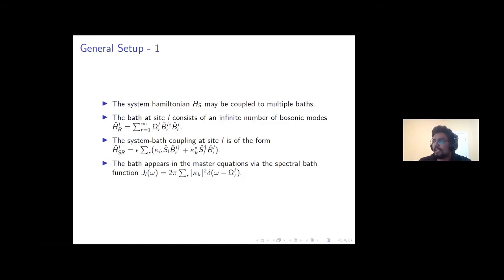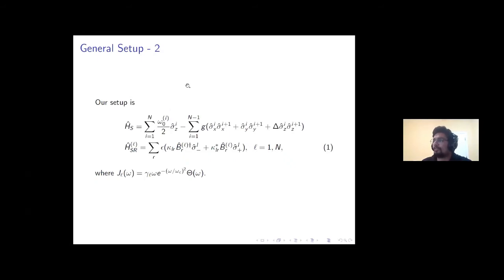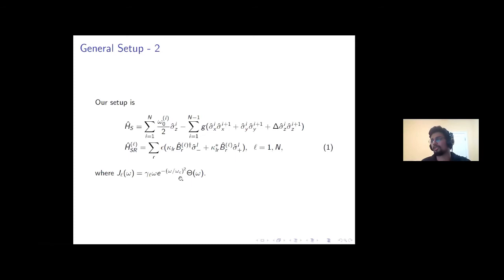The general setup we look at is a system with multiple sites where each site may be coupled to its own bath. The bath at each site has an infinite number of bosonic modes, and the system-bath coupling is of a specific form. The bath appears in our master equations via a spectral bath function defined in a particular way. For this work, we look at a system consisting of a Heisenberg XXZ chain with a commonly seen coupling, and we assume our spectral bath function is linear with exponential cutoff for positive frequency.